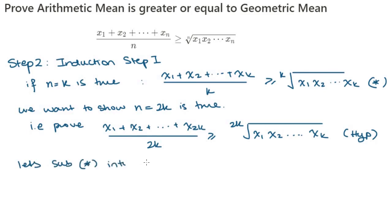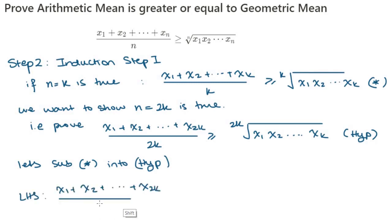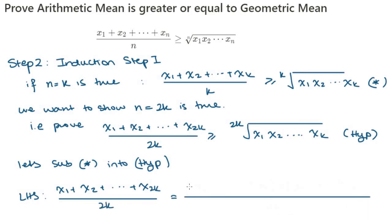Let's try to substitute our star equation into the hypothesis. The left-hand side of the hypothesis is (x₁ + x₂ + ⋯ + x₂ₖ)/(2k), which we can rewrite by splitting up the top half of the fraction into x₁ to xₖ and xₖ₊₁ to x₂ₖ.